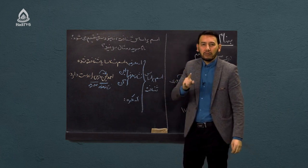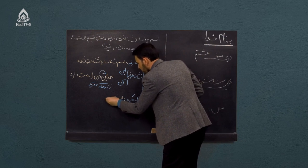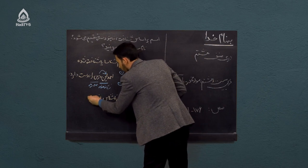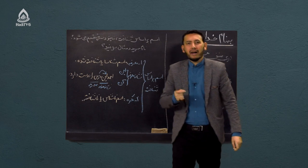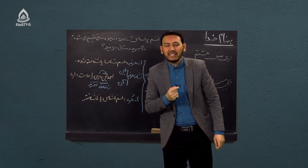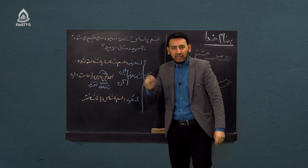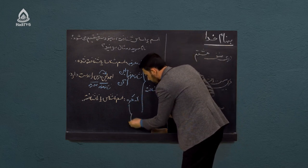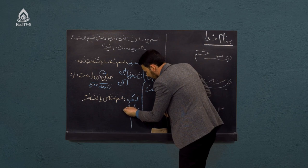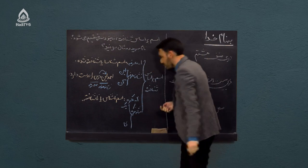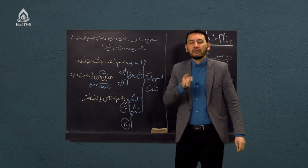اسم نکره به اسمی می‌گویند که برای مخاطب آشنا نباشد. اسم نکره یعنی اسم ناشناس. نشانه‌های معرفه دو تا بود: «این» و «آن». برای اسم نکره هم دو نشانه موجود است. نشانه نکره دو تاست: یا «یک» و یا «یا». «یک» و «یا» دو نشانه اسم نکره هستند. هر زمانی که این دو نشانه را دیدیم متوجه می‌شویم که آن اسم، اسم نکره است.